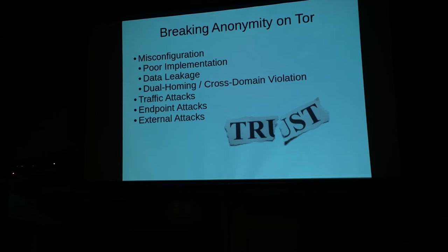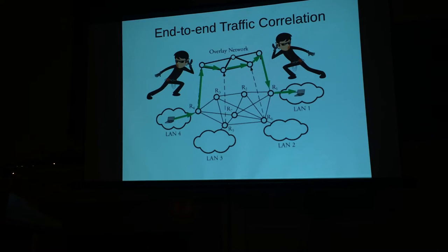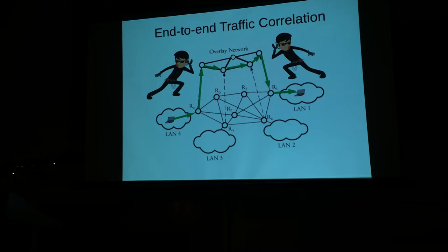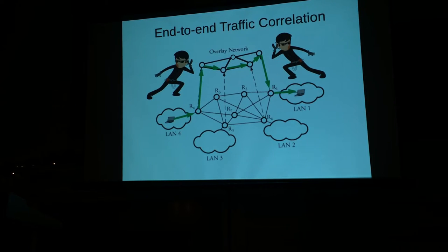In addition to accidental loss of anonymity through misconfiguration, there are both theoretical and practical attacks. A prime example is the end-to-end correlation attack: if you had the world's biggest data vacuum, you could watch every single entry and exit point on Tor and do a traffic timing attack — a meg goes in here, a meg pops out there. Watch enough traffic with specific size and timing and you should be able to say what's going on. It's a massive timing attack.